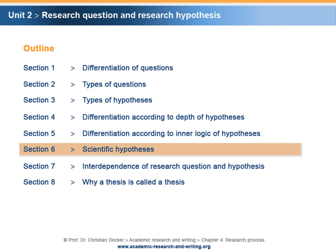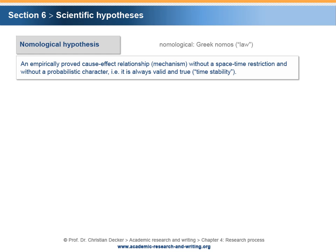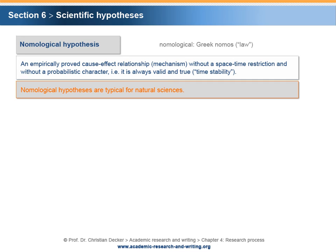Section 6: Scientific hypotheses. Different forms of scientific hypotheses are applied in different fields. A scientific hypothesis can have the form of a nomological hypothesis. The term nomological stems from the Greek nomos for law. A nomological hypothesis can be defined as an empirically proved cause-effect relationship or mechanism, without a space-time restriction and without a probabilistic character — that is, it is always valid and true. It is characterized by time stability. Nomological hypotheses are typical for natural sciences.